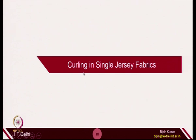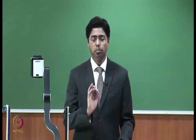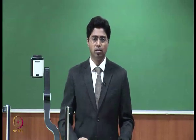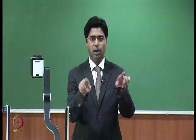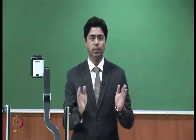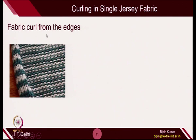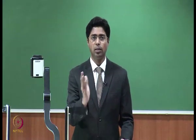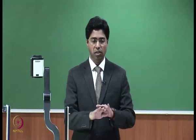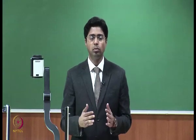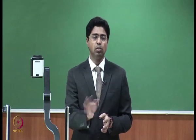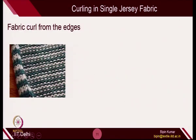Now we come to the next section: curling in single jersey fabrics. Curling is one of the basic features you can observe by looking at single jersey fabrics. Whenever you see any single jersey fabric with open ends — if you have a rectangular section with free edges — you will always observe the fabric curling from the edges. This is one of the basic features that makes knitting fabric entirely different from woven fabric. When you cut a woven fabric, it remains stable. But when you cut a single jersey fabric from the edges, it will curl and bend — it will never remain stationary like a flat surface.